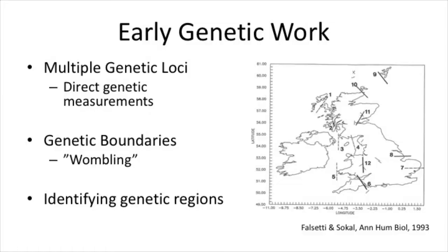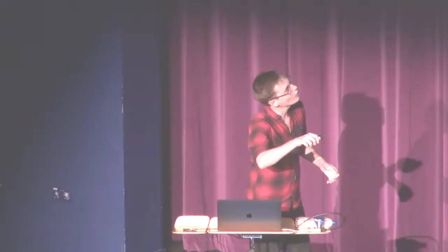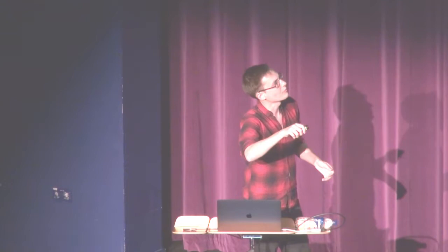Before we started this work, what did we know about population genetics of Britain and Ireland? You can look at multiple genetic loci — as was done in the 90s with around 13 sites — and see genetic boundaries. On either side of these barriers, people are genetically different. You can see Wales separate from England, Cornwall from England, Orkney and Shetland, and lines separating Ireland. This is one way to identify genetic regions.